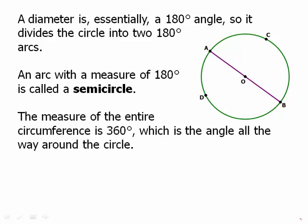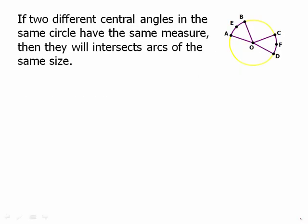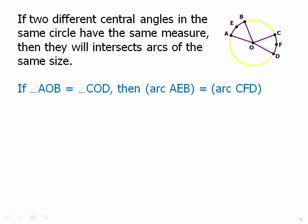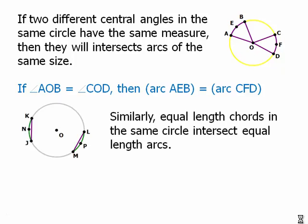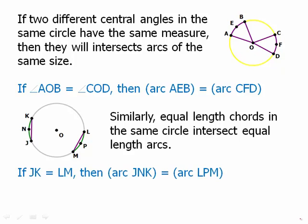It's often good to understand these angles in terms of how much you would actually have to turn yourself. If two different central angles in the same circle have the same measure, they will intersect arcs of the same size. So two equal angles intersect two equal arcs, and if we were told the arcs were equal, we could deduce the angles were equal. Similarly, equal-length chords intersect equal-length arcs. If we know the chords have equal length, then the arcs have to be equal, and vice versa.